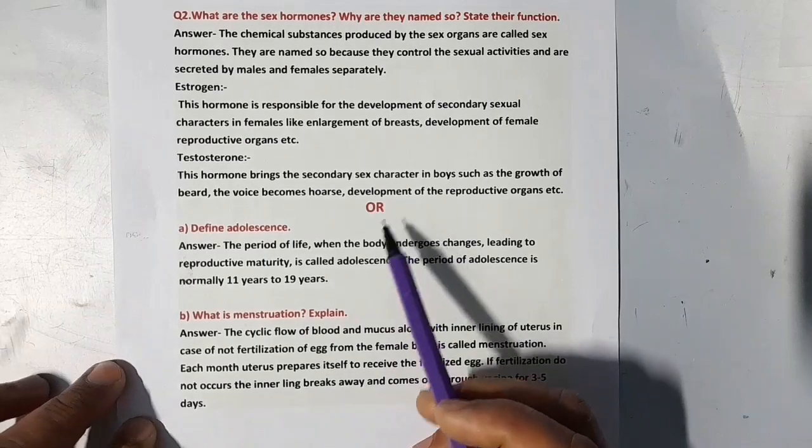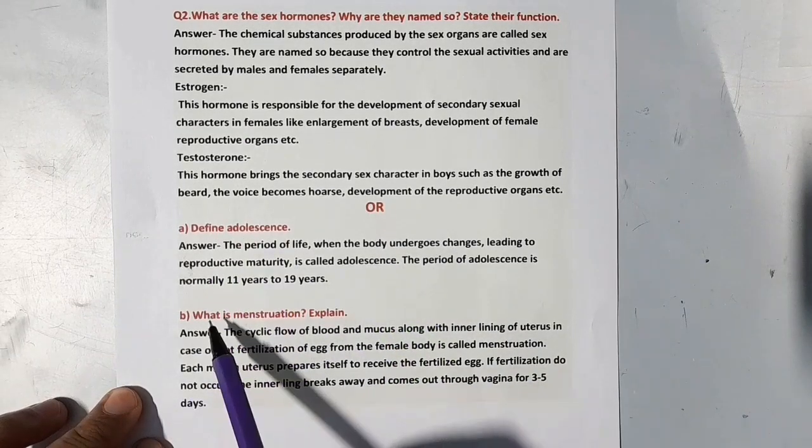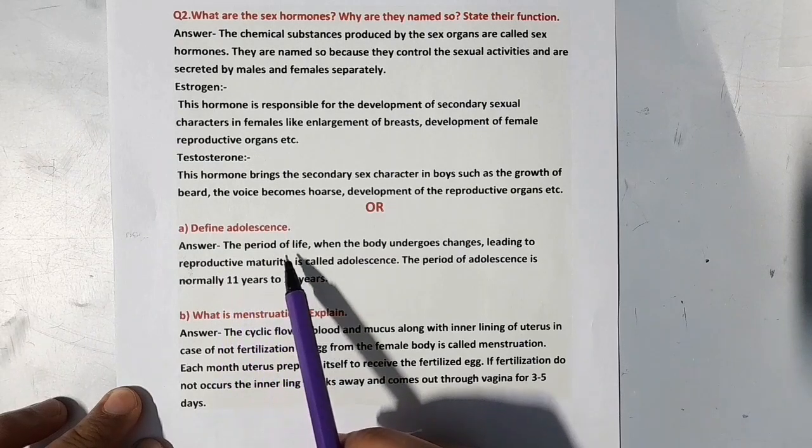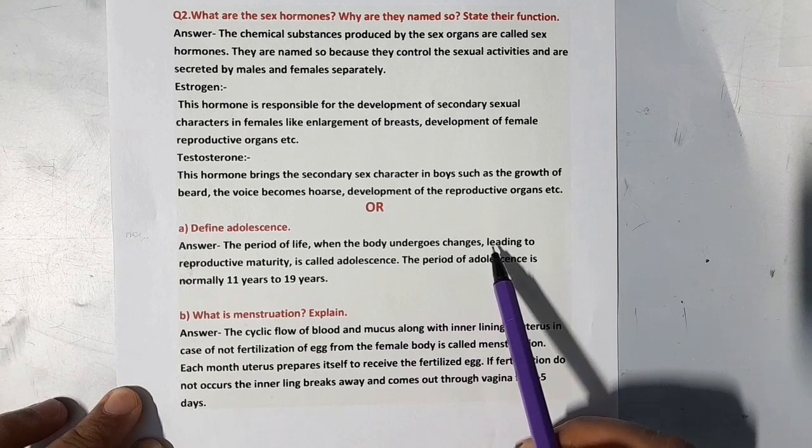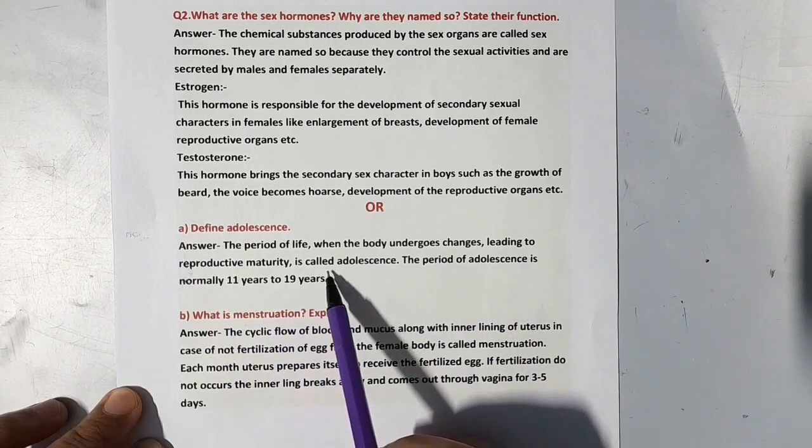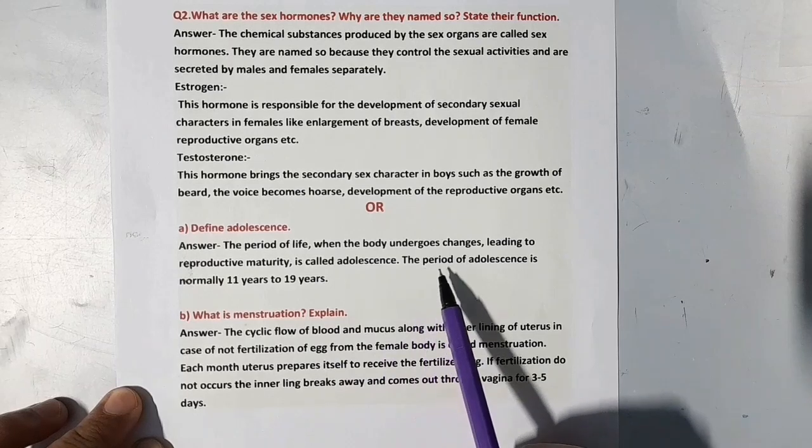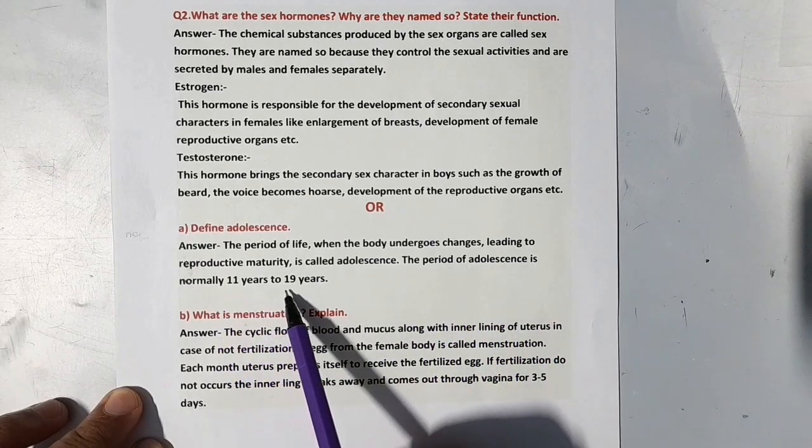The next question is define adolescence. The period of life when the body undergoes changes leading to reproductive maturity is called adolescence. The period of adolescence is normally 11 years to 19 years.